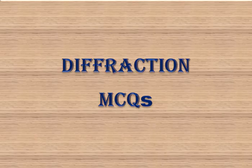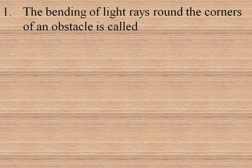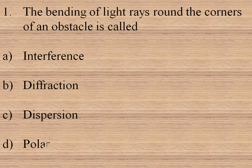Hello guys, welcome to this lecture. In this lecture we are going to discuss about diffraction MCQs. The first question is: the bending of light rays around the corners of an obstacle is called — interference, diffraction, dispersion, or polarization? We know it is called diffraction; it is the simple definition of diffraction. So the answer is option B.